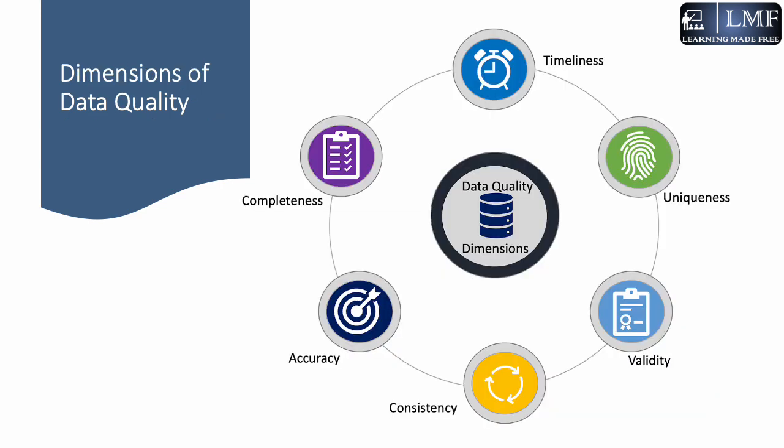Now let's talk about the dimensions of data quality. What you see on screen are the six main dimensions of data quality. The first one is completeness — this dimension measures the availability of the minimal set of attributes required by the end user to meet the business objectives.